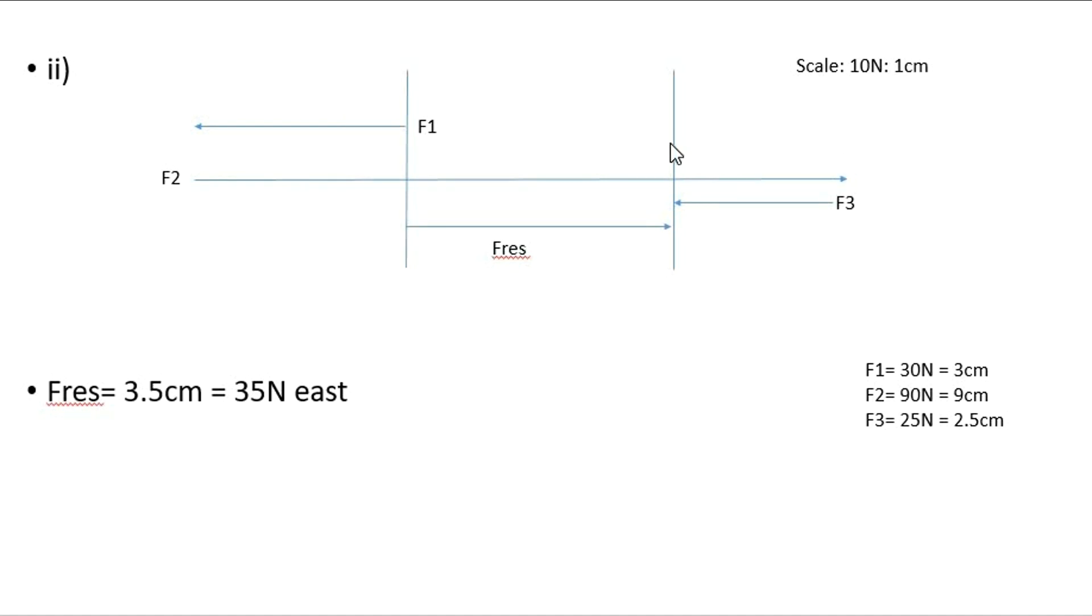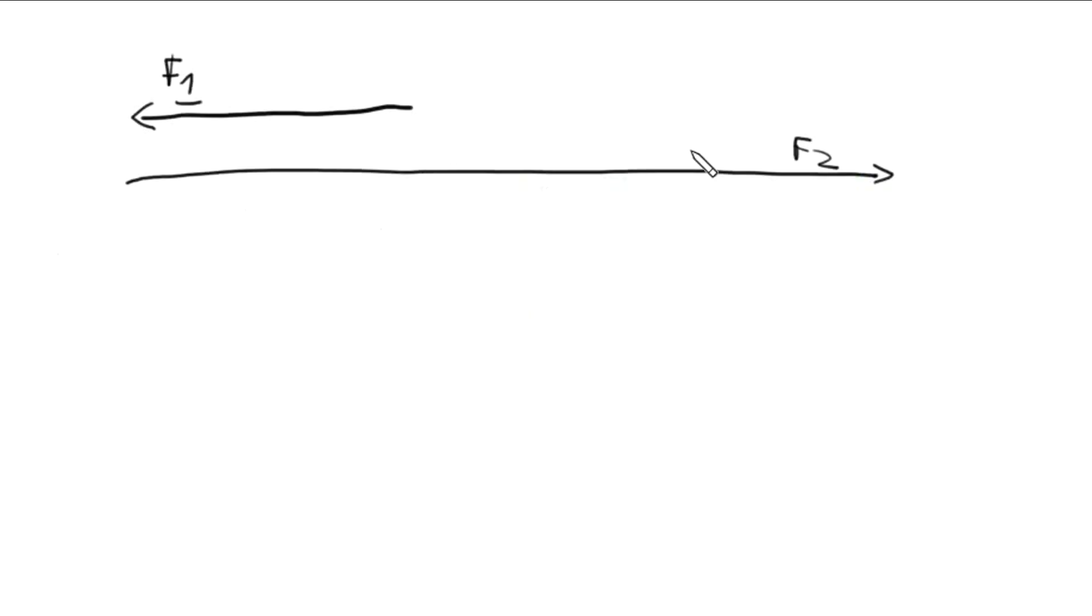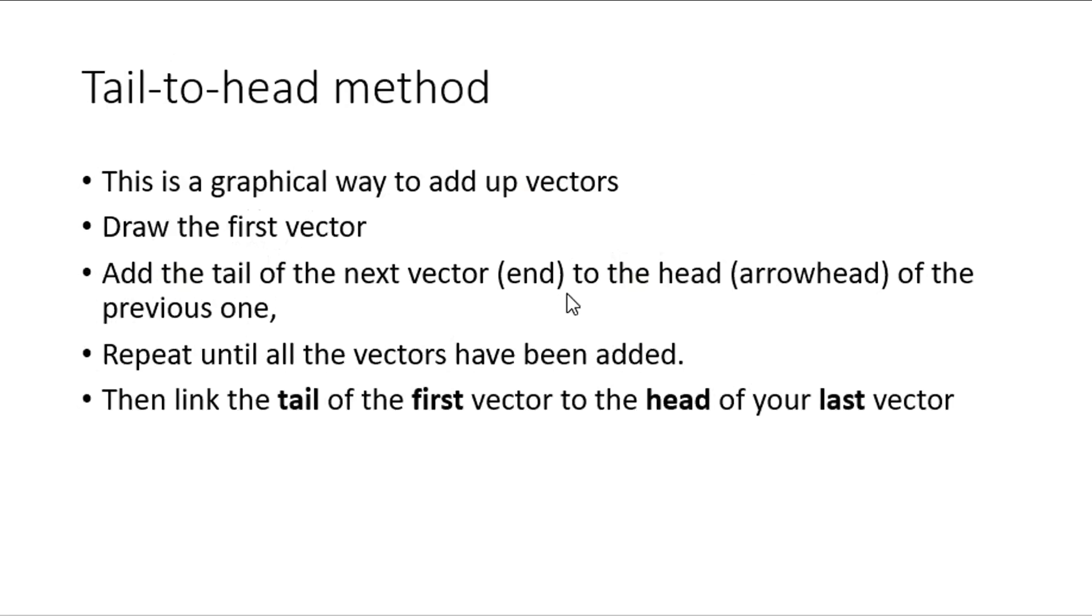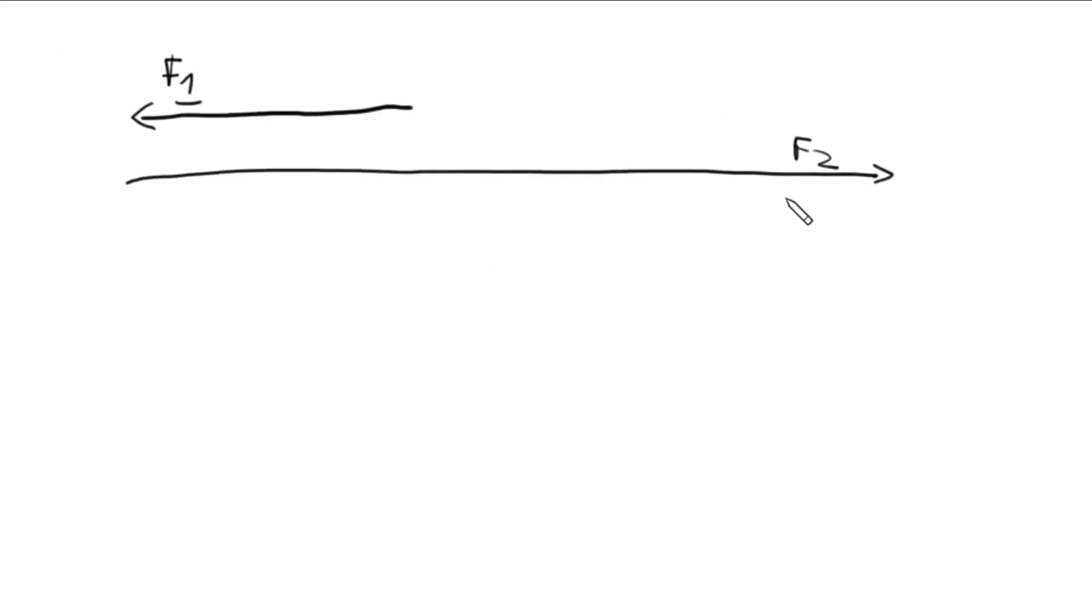Then, the next step for the tail-to-head method is to repeat until all the vectors have been added, then link the tail of the first vector to the head of your last vector. Just as in the picture, we link the tail of our first vector to our last. There's our F3. We apply step two first.